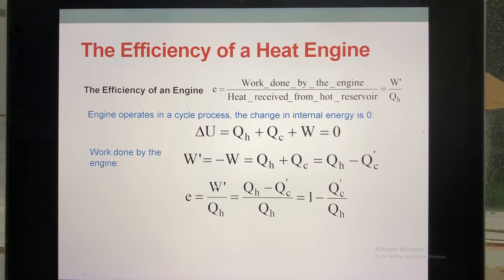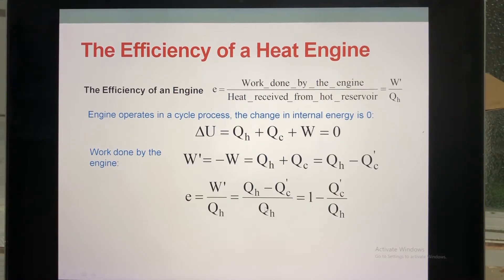This one is the work done by the system. Dividing through by Q_hot gives you a 1, and finally you have this efficiency formula.